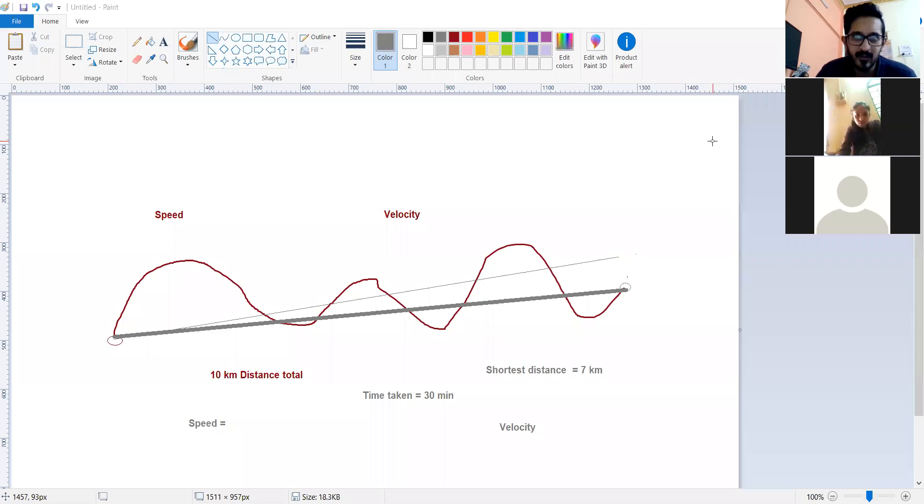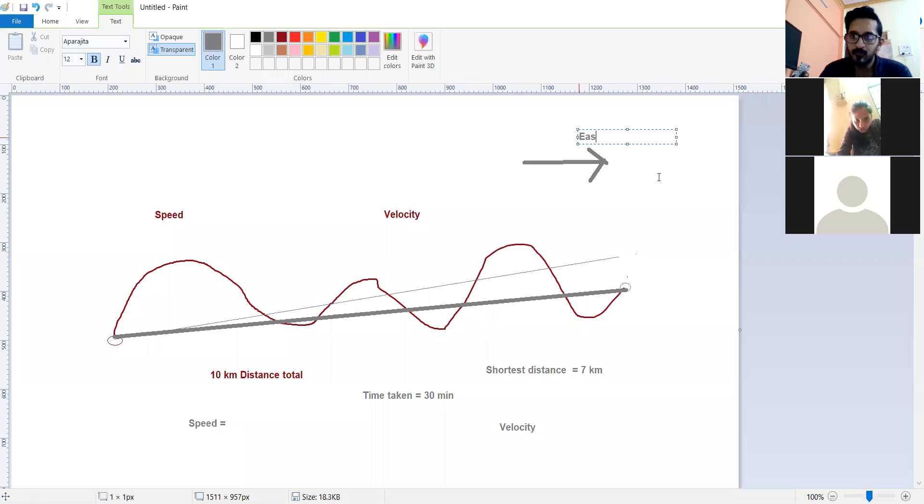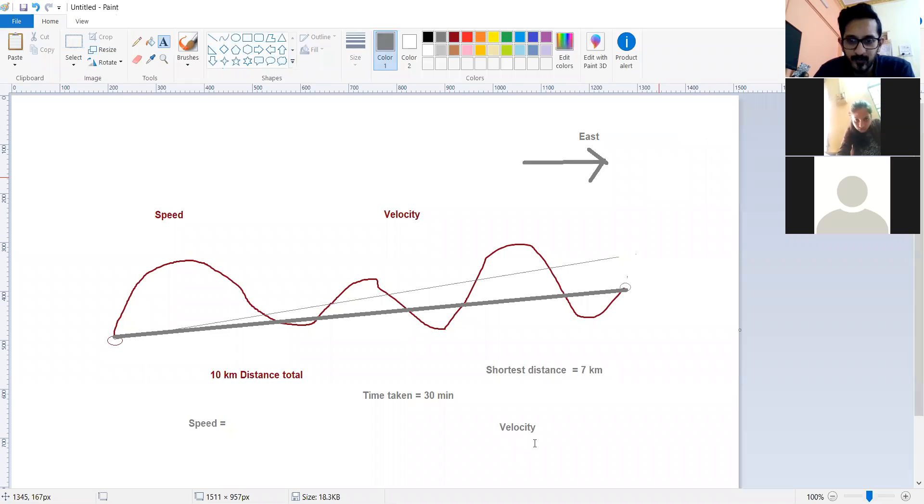So let me again share the screen. So now can you tell that the direction of east, west is in the direction? So what would be the velocity?